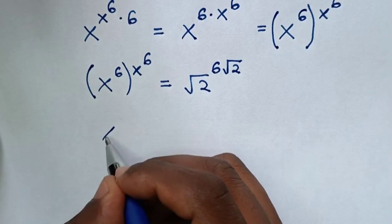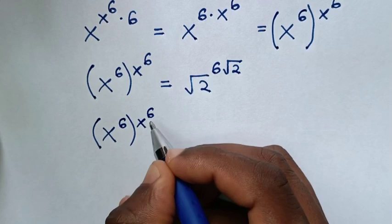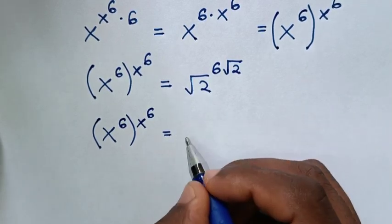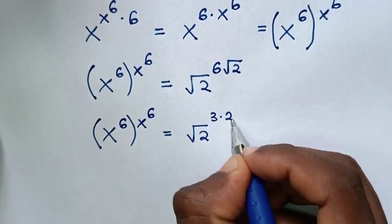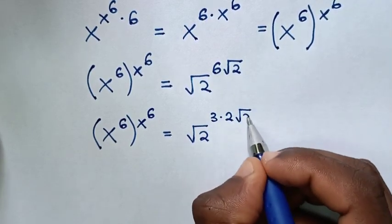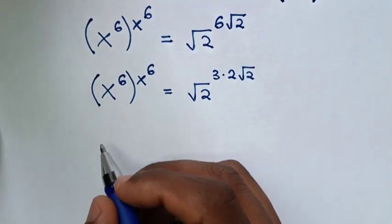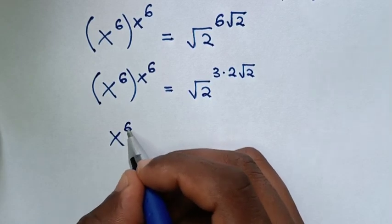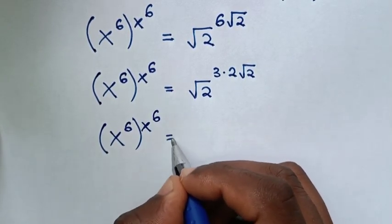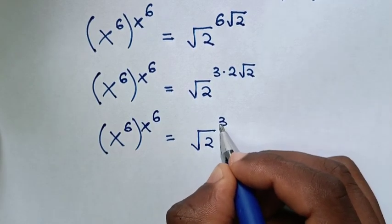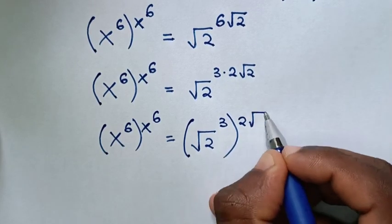Then our equation will be x power of 6, bracket, by power of x power of 6, is equal to square root of 2 to the power of 6, which is the same as 3 times 2, then square root of 2. In the next step we apply the bracket, so it will be x power of 6, bracket, power of x power of 6, is equal to square root of 2 power of 3, bracket, power of 2 square root of 2.